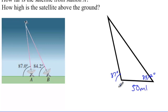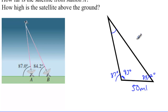With A being 87 degrees, we can figure out the interior angle at A by doing 180 minus 87, which gives us 93 degrees. Then using that, 93 plus 84.2 is 177.2, so 180 minus 177.2 is 2.8. This very small angle at the top — at the satellite — is 2.8 degrees.